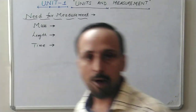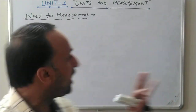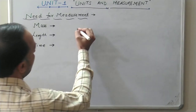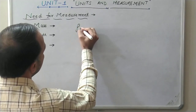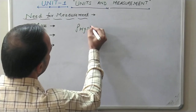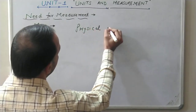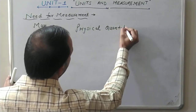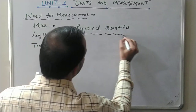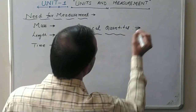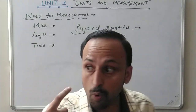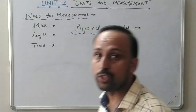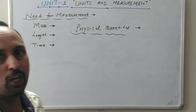In good measurement, the second important thing is knowing what you are measuring. Whenever we go for measurement, we need to study the second important concept, which is known as physical quantities. What are physical quantities? Whenever I talk about physical quantities, I mean: what are we going to measure?